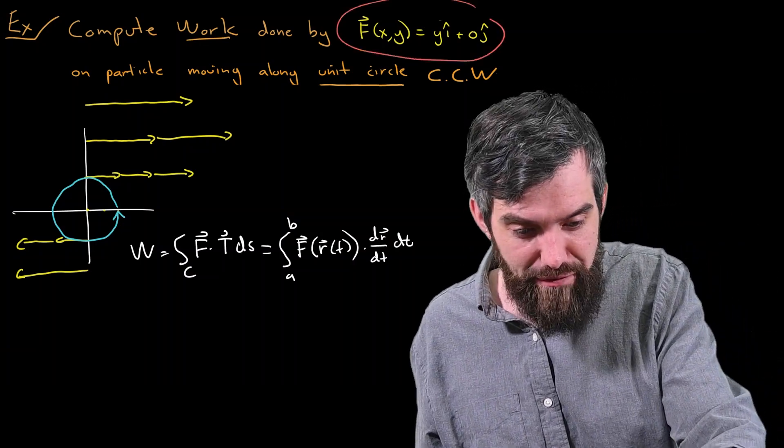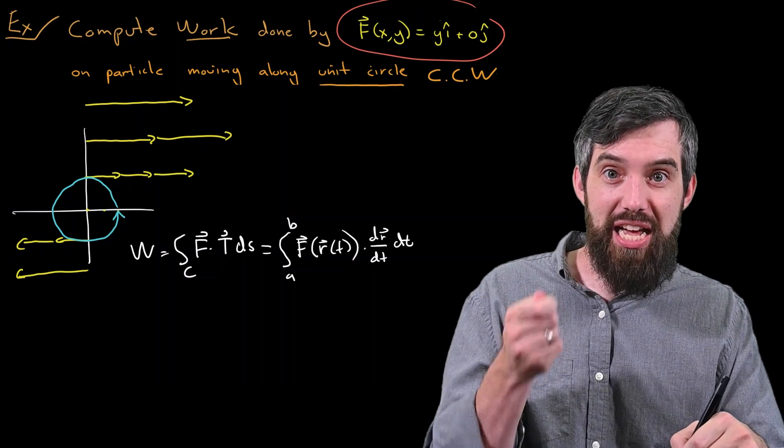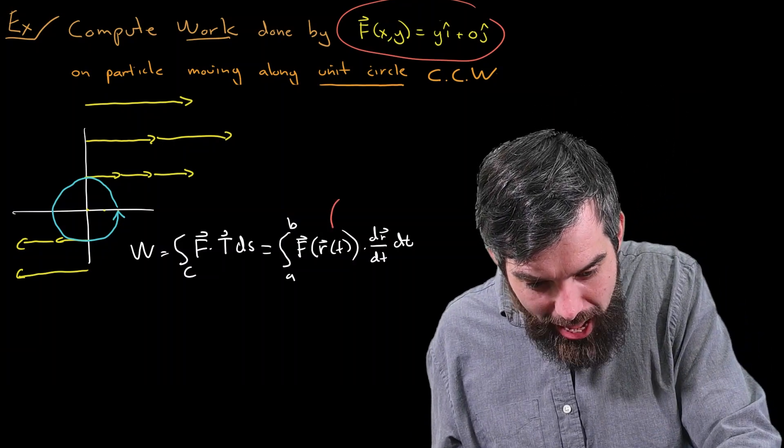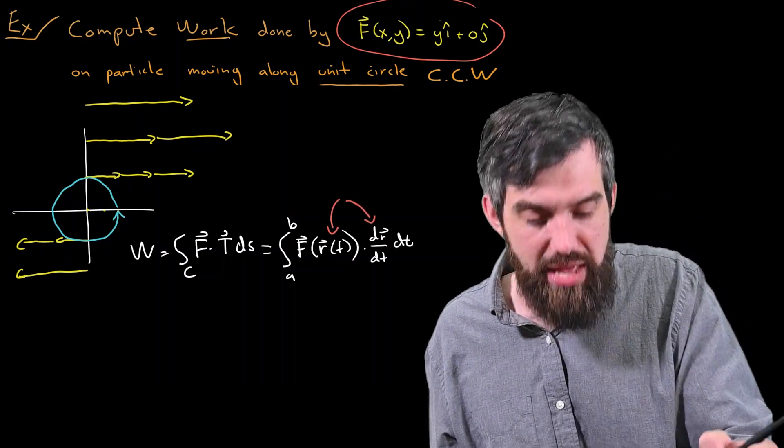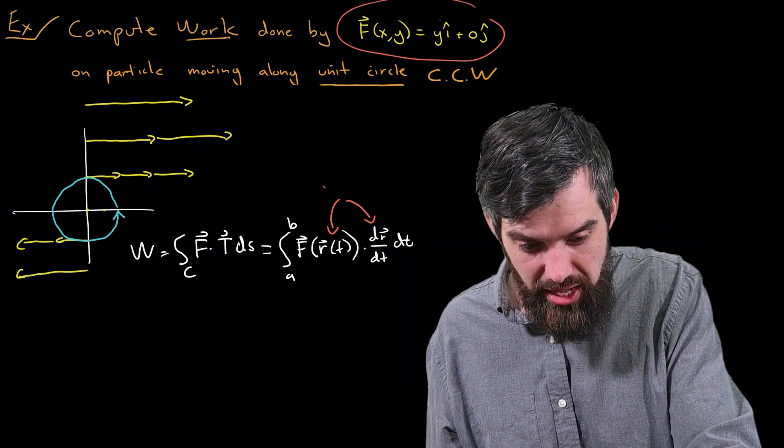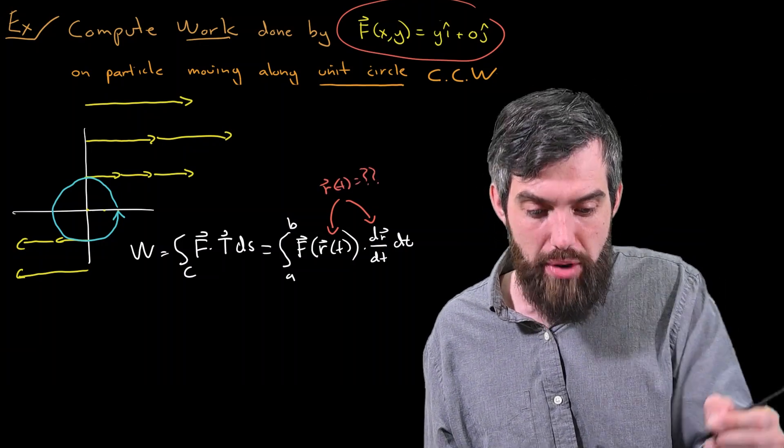The field I know, if you recall, I have the field written there in the problem. But the r(t), I do not. So I need to figure out how can I come up with this r(t), and then subsequently dr/dt. That is my big question mark I need to figure out.